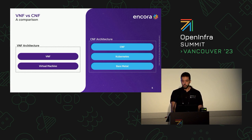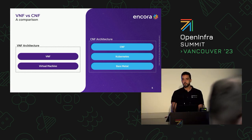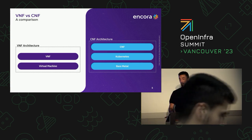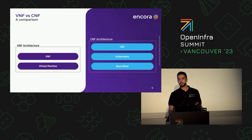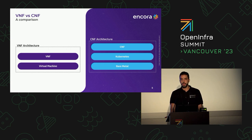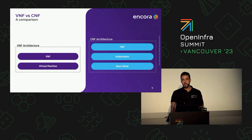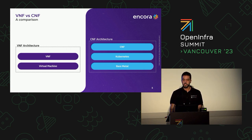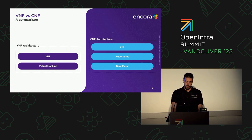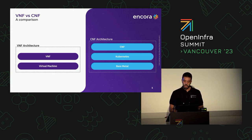VNFs are software-based network functions designed to run in virtualized environments, whereas CNFs are containerized network functions that leverage containerization technologies, just like StarlingX. Telecommunication companies need to adapt their existing VNFs to run as CNFs, which involves re-architecting these network functions, containerizing them, and orchestrating them.